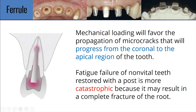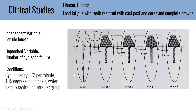The idea of the ferrule is that if you have some height of tooth structure that the crown can bind to and help resist these fatigue forces or lateral forces, then you're going to minimize the chance of overloading or losing your cement seal.